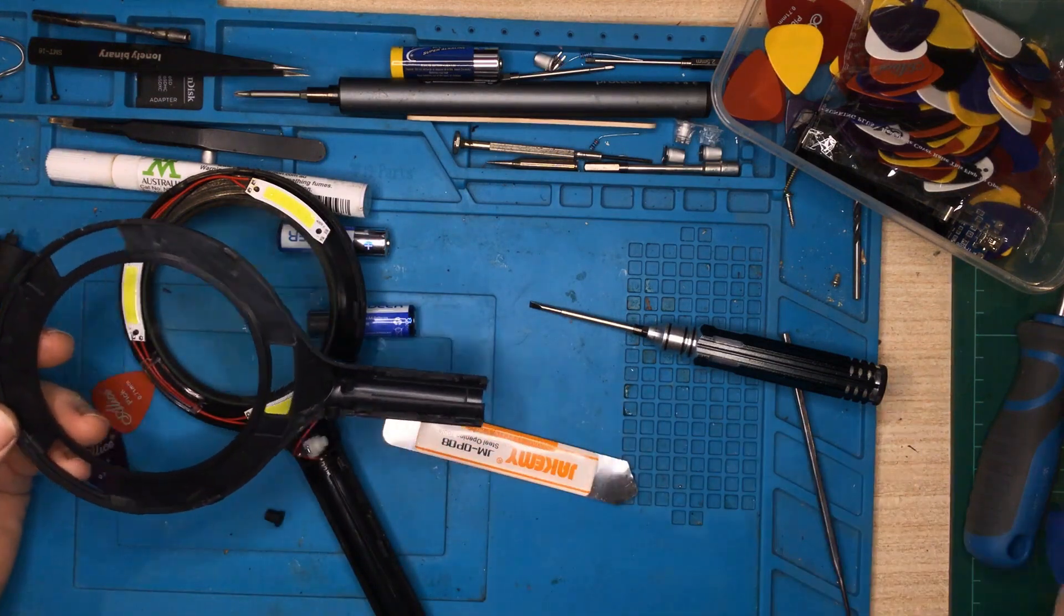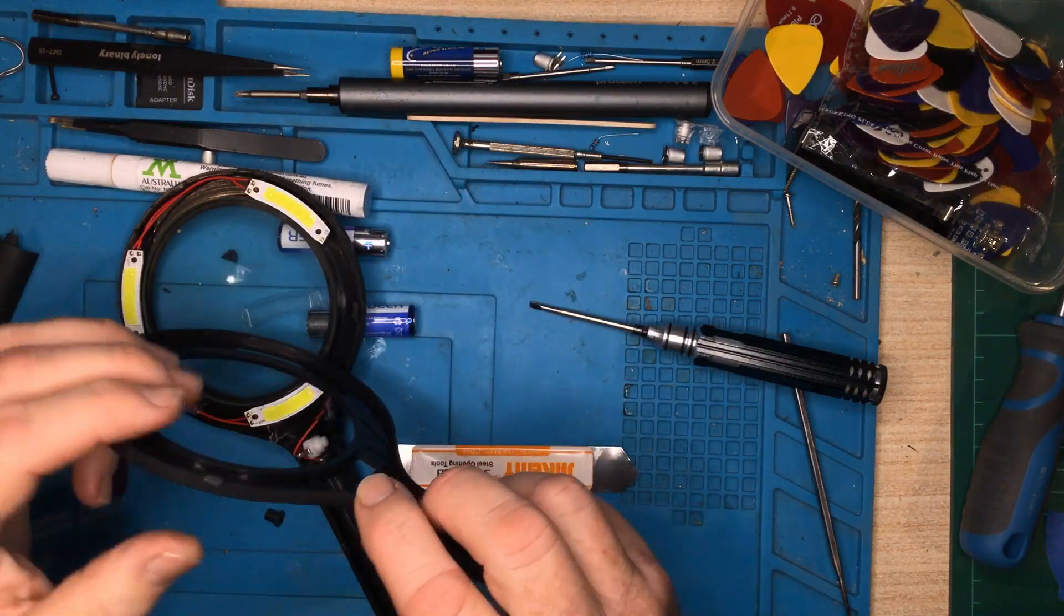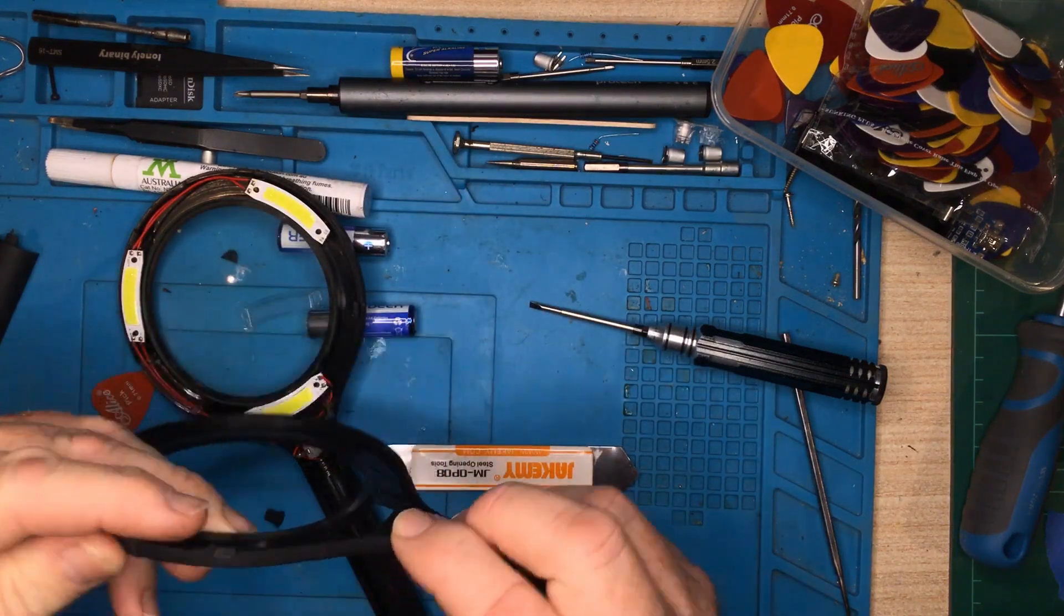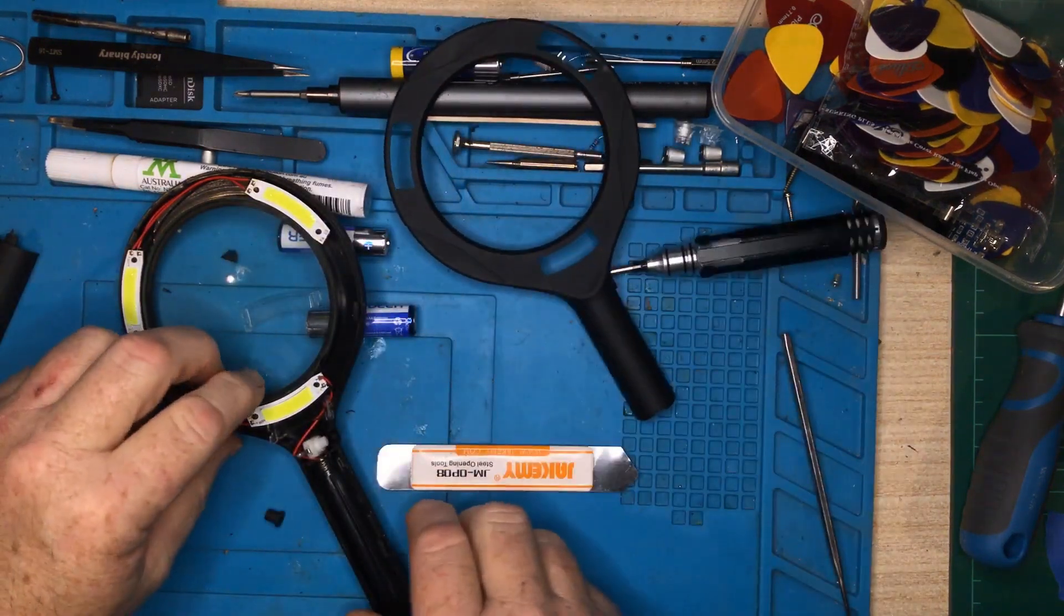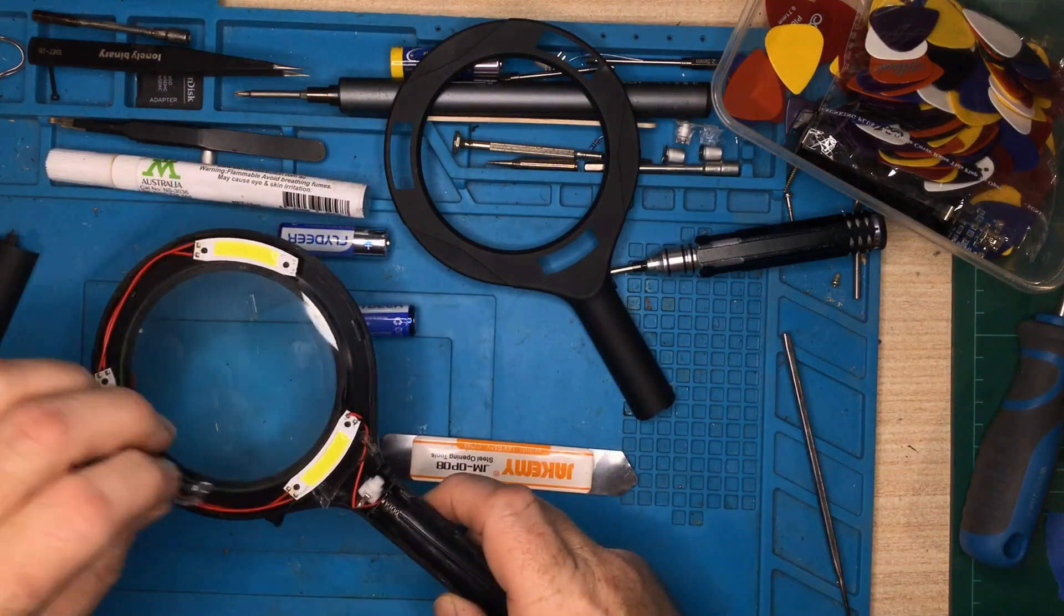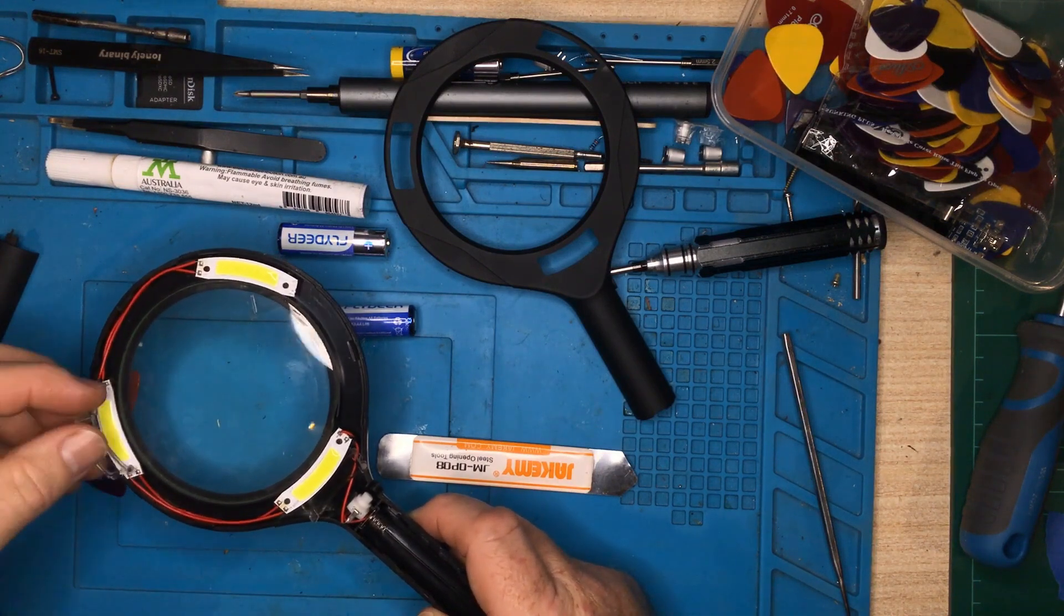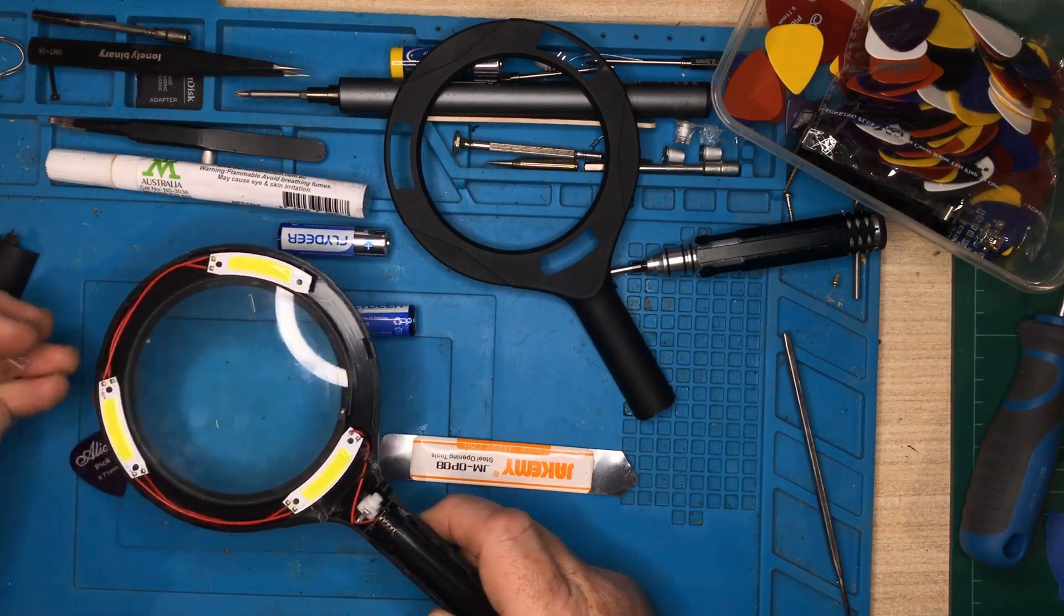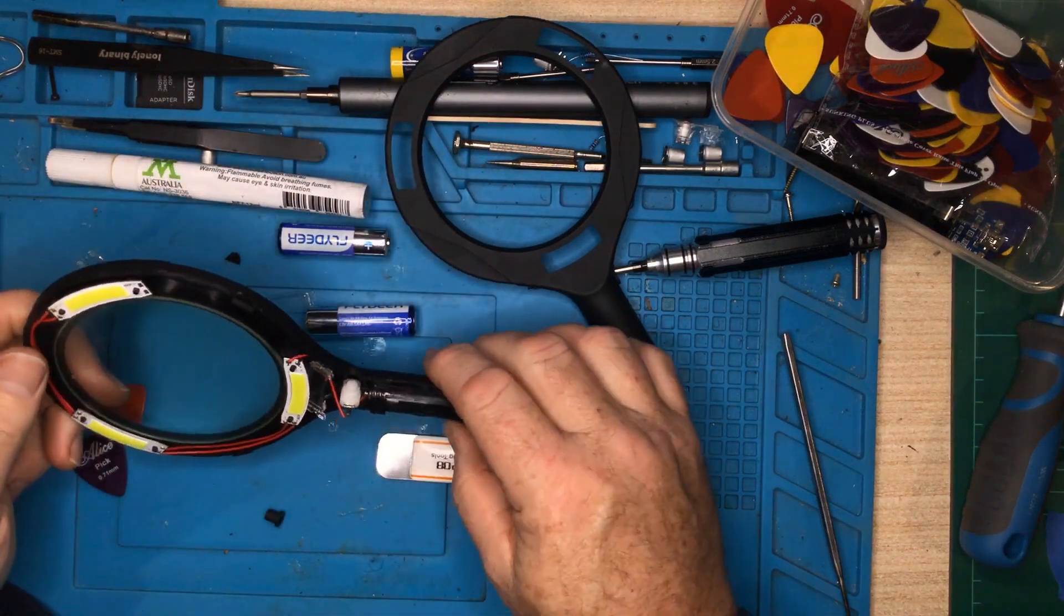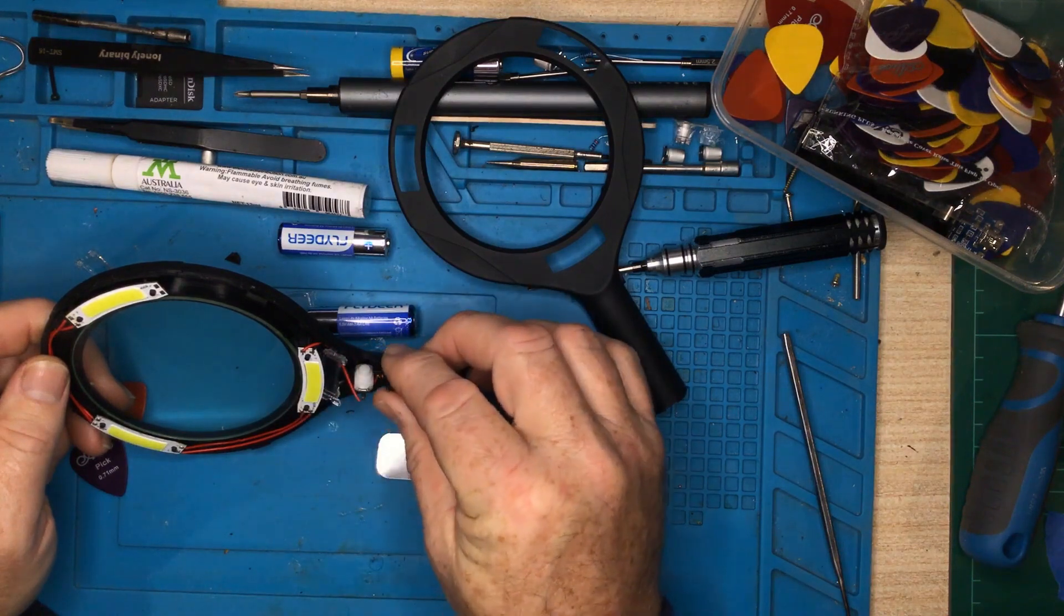There we go. So, yeah, a little bit of damage to it, but not too much. Okay, so where do those things go? Little plastic lenses go over there. Alright. And that'll be the button switch.